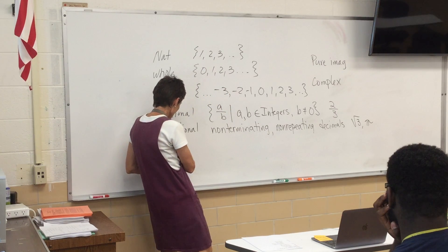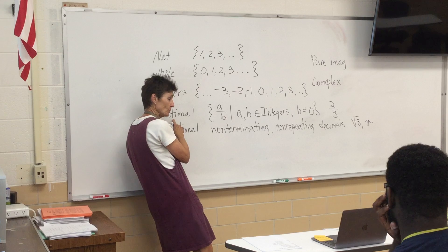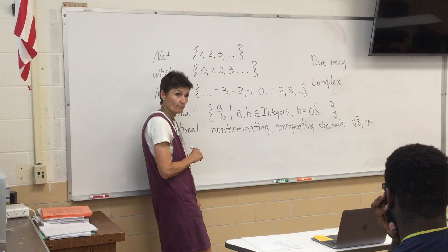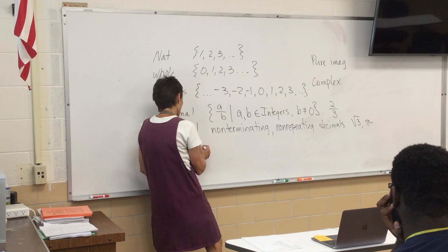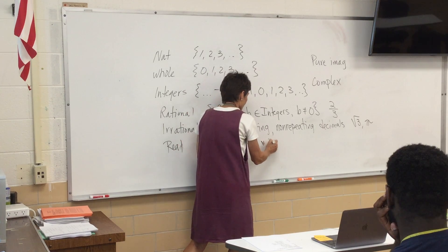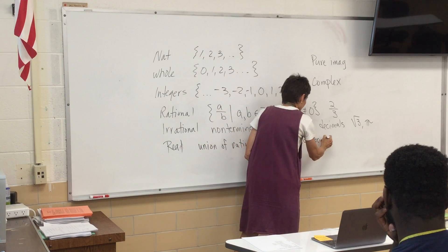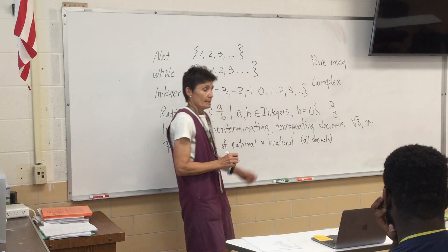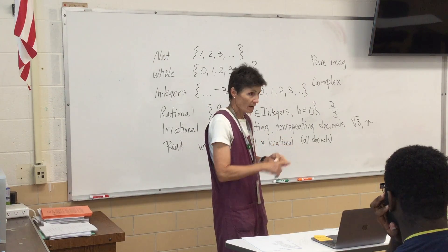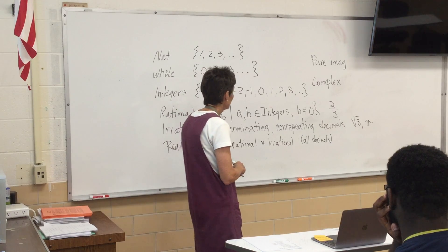Now, the real numbers — if you were to put all of the rationals and all of the irrationals in a big pot, you would have the real numbers. So the real numbers are the union of the rational and irrational numbers. In other words, all decimals. If rational is repeating or terminating, and irrational is non-repeating, non-terminating, then together they cover all the bases — all decimals.